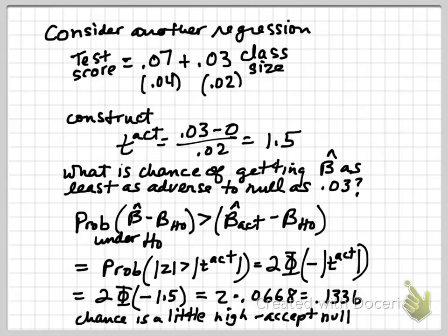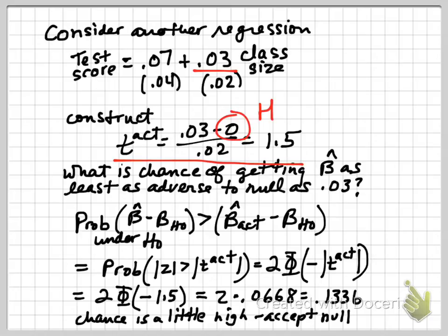Let's consider another example. Here we've estimated test score on class size, and we find that each additional unit of class size is associated with a higher test score of 0.03. We construct the t-statistic: (0.03 − 0) / 0.02 = 1.5, where our null hypothesis is that β₁ equals 0.